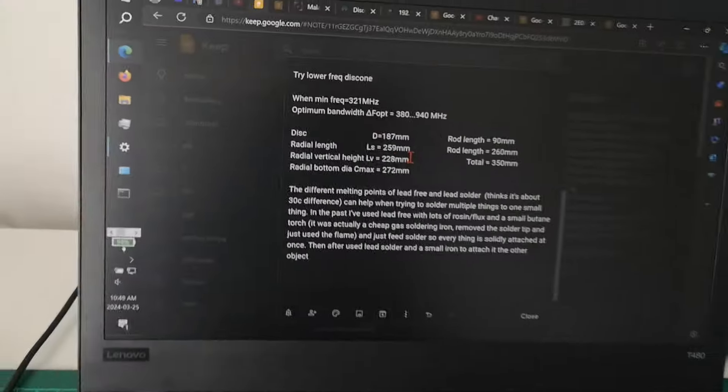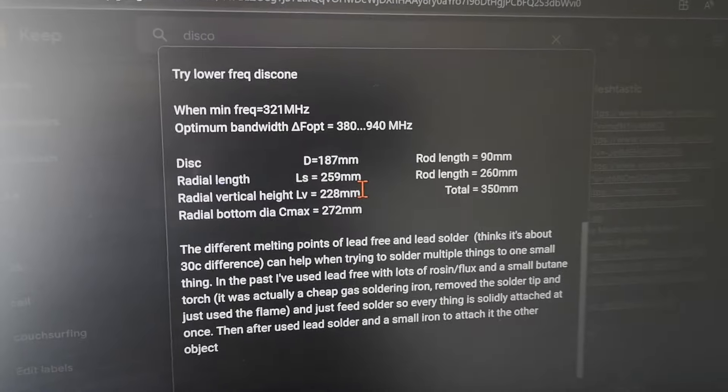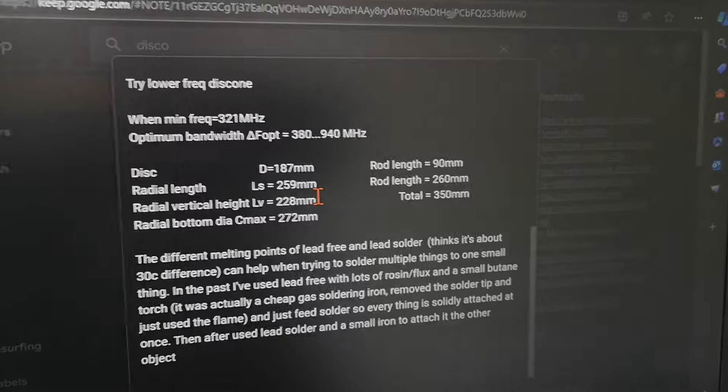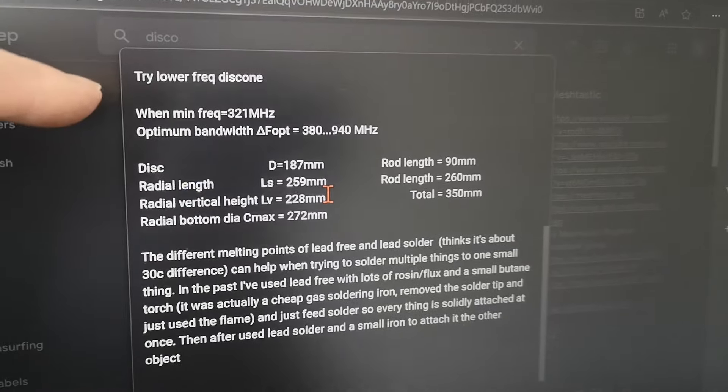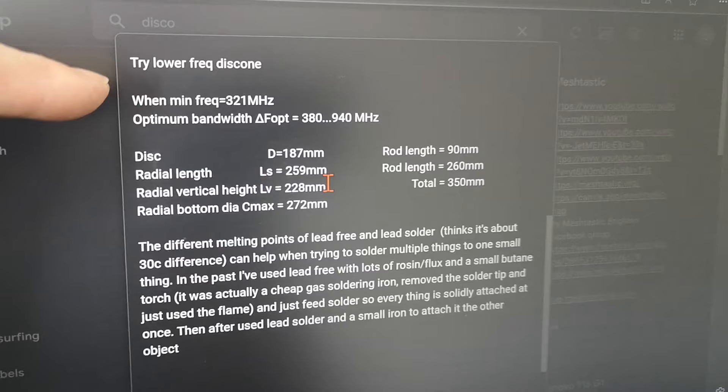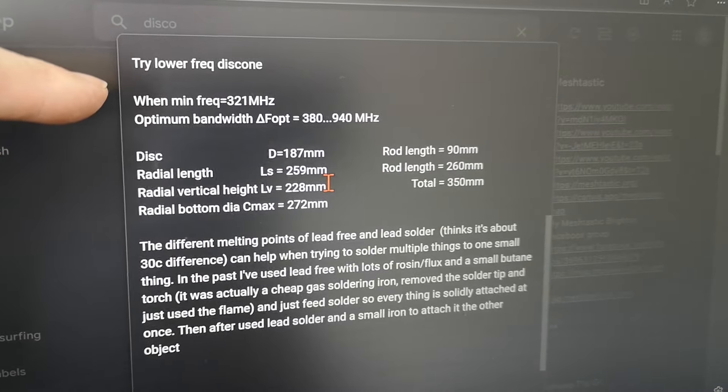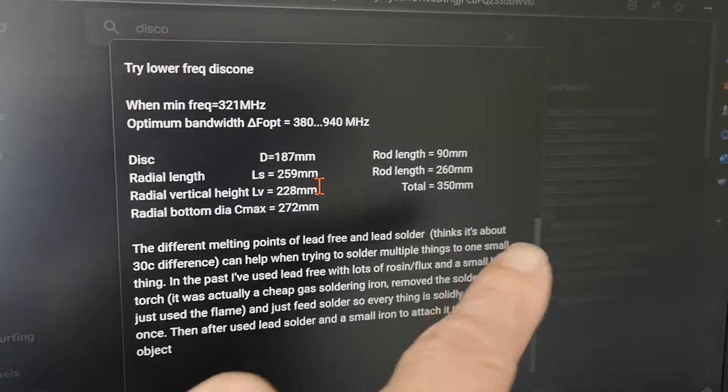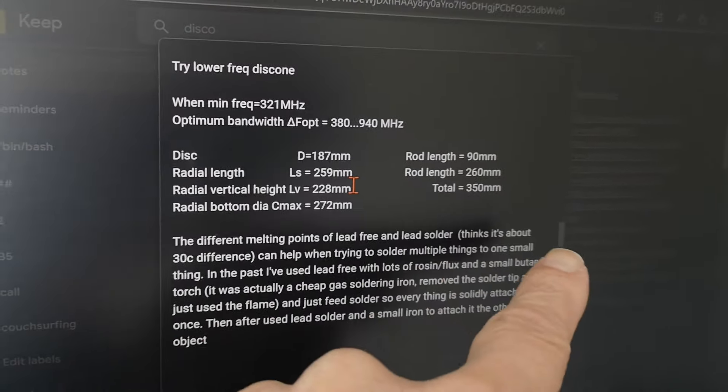The actual design parameters I put into the calculator on the website, which I'll put the link to in the description below, instead of 350 MHz minimum frequency, I said 321. The reason why it's a funny number with a 1 on the end is because I got some brass rods which are 350mm long.